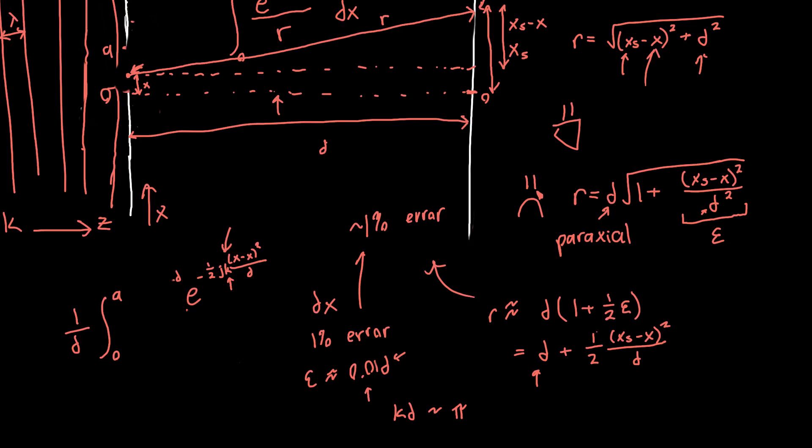We can pull out this e to the minus jkd term, because that's not a function of x, e to the minus jkd. And let's move this, this guy down in front of the integral. So e to the minus one half jk, x_s minus x squared over d. And then we're integrating over x. And so at this point, we've actually found a really important result. This thing here, this is called the Fresnel integral. And so this will be going over in future videos on Fresnel diffraction. But this is, we've only made one assumption, and that's the paraxial approximation. And you can actually use this integral to sort of figure out at intermediate points what your, what your electromagnetic field looks like, if you have a slit of length a, where this is the overall wave vector length k.